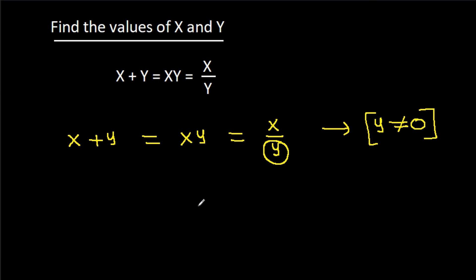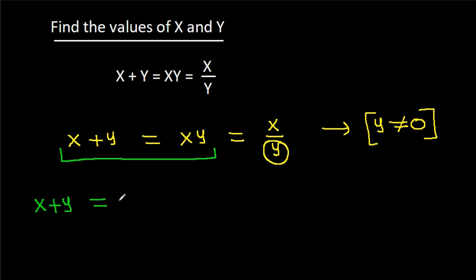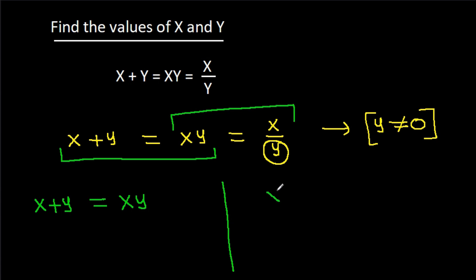Now, we can take x plus y equals x times y as the first equation, and x times y equals x divided by y as the second equation.